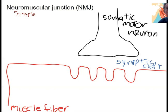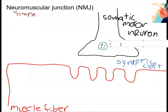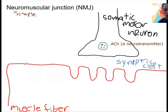This should be review. Inside the somatic motor neuron in that synaptic terminal, we've got a vesicle — a vesicle filled with neurotransmitter. The neurotransmitter of somatic motor neurons is always acetylcholine. You've heard of acetylcholine already — ACH. This is a neurotransmitter, a chemical messenger released from somatic motor neurons.